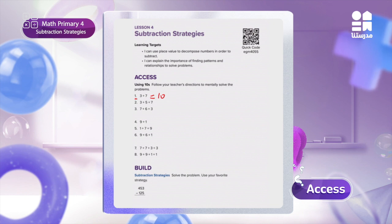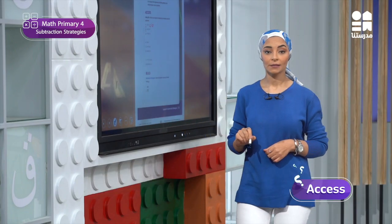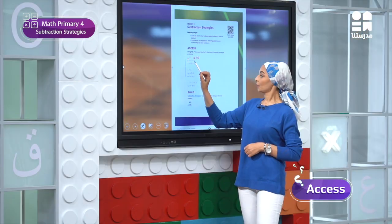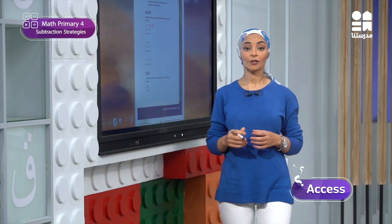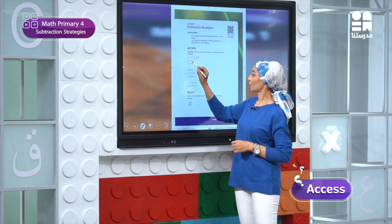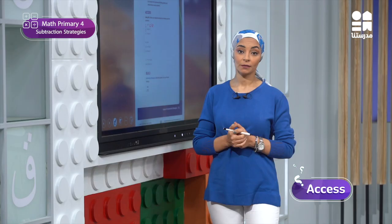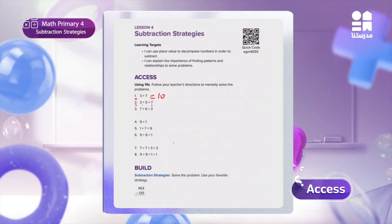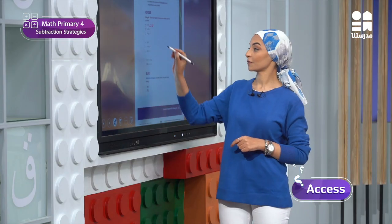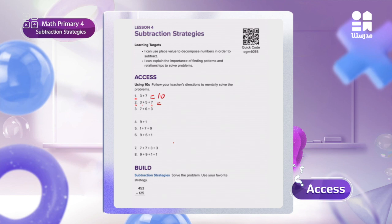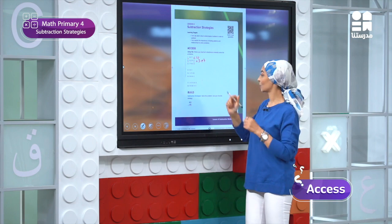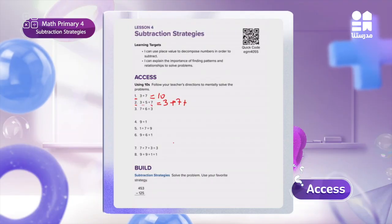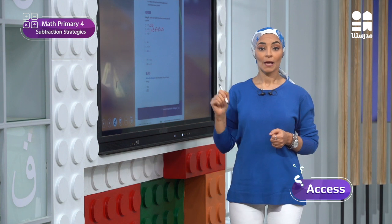Yasin said that in number 2, it was 3 plus 5 plus 7. Yasin used the commutative property — changing the places in addition doesn't matter. He said: here, I do 7 plus 3, which gives me 10, then plus 5 gives me 15. So 3 plus 7 equals 10, plus 5 equals 15.